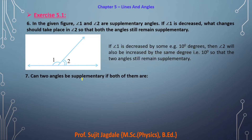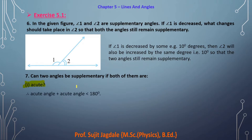Question 7: Can two angles be supplementary if both of them satisfy certain conditions? We need to find whether their addition equals 180 degrees. First condition: both angles are acute. Obviously no — because acute means less than 90 degrees, and adding two angles each less than 90 degrees gives a sum less than 180 degrees. Thus two acute angles cannot be supplementary.